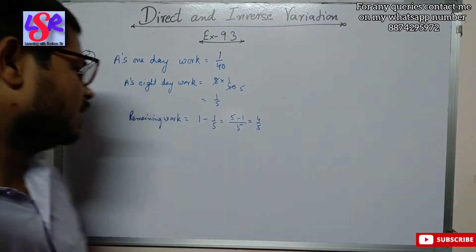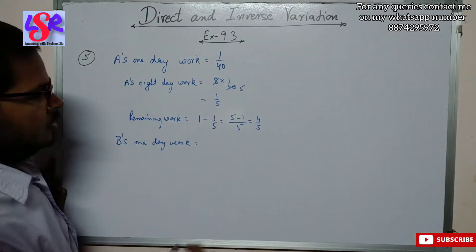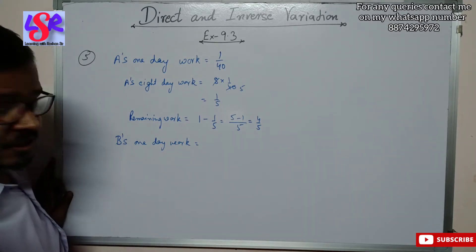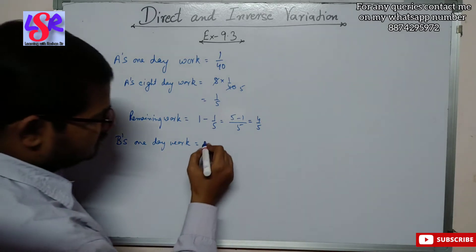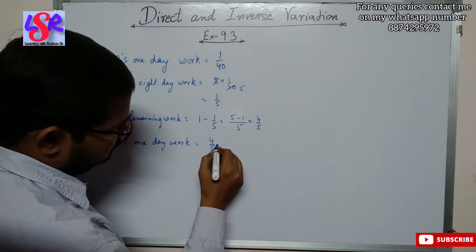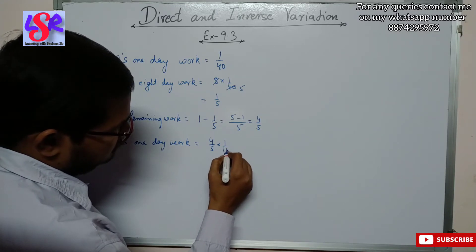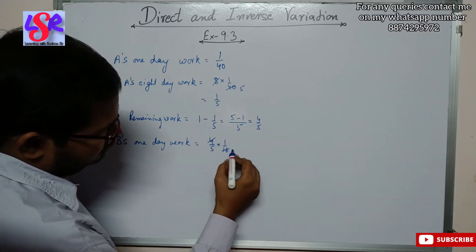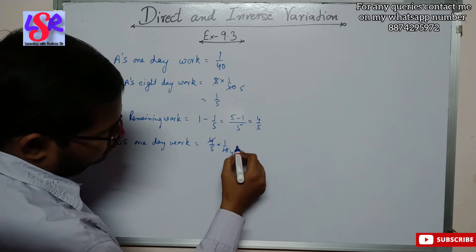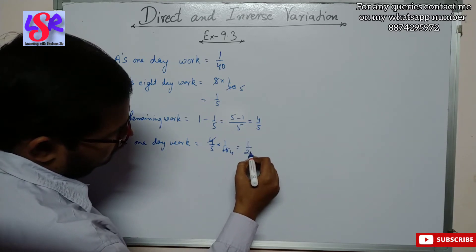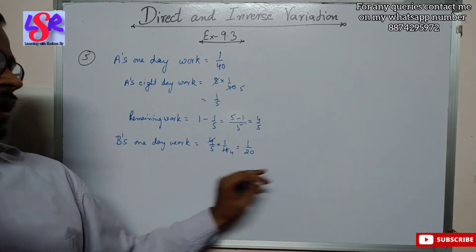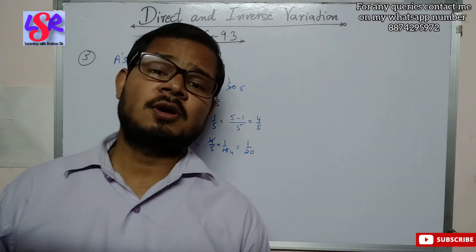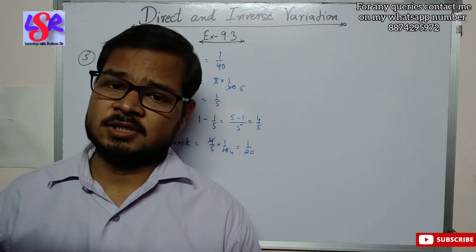So B's one day work equals the part of work completed by B in 16 days. This is 4 upon 5 into 1 upon 16. Here we cancel out by 4, so it equals 1 upon 20. So B's one day work is 1 upon 20, meaning B completes the whole work in 20 days.